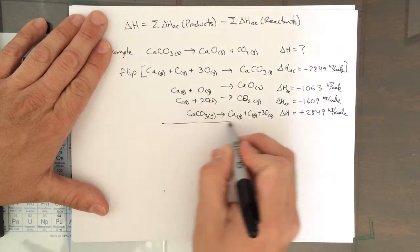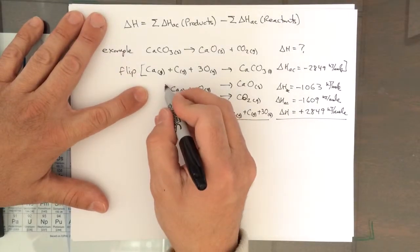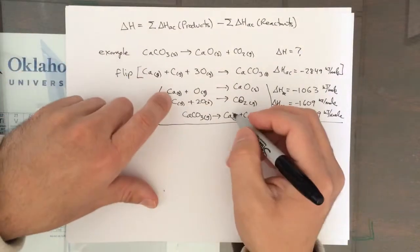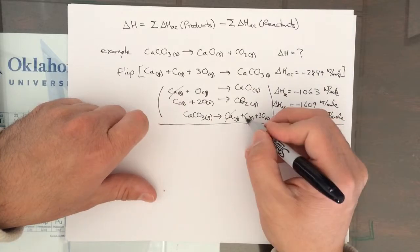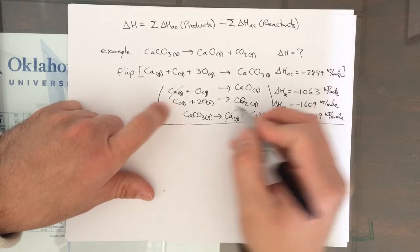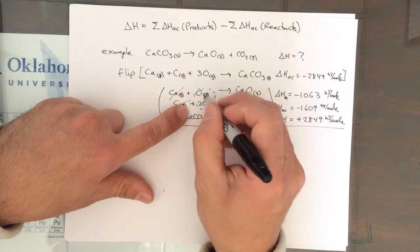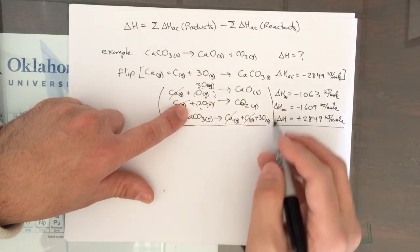Then when we add all this up, these three reactions here will now add up to the reaction we want. You'll notice that calcium gas is a reactant and a product, so that drops out. Carbon gas is a reactant and a product. That drops out. All together here we have three oxygen gases and we have three oxygen gas down here, so that drops out.